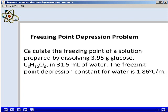In this problem, we want to calculate the freezing point of a solution prepared by dissolving 3.95 grams of glucose, C6H12O6, in 31.5 milliliters of water. The freezing point depression constant for water is 1.86 degrees Celsius per molality.